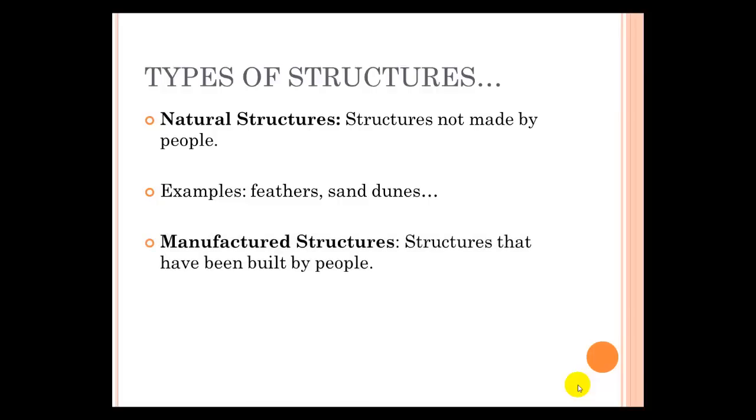A second type of structure is manufactured structures. Structures that have been built by people. So it could be high-tech structures, like the Eiffel Tower, or it could be low-tech structures.